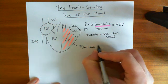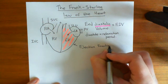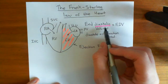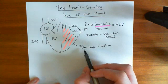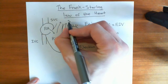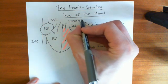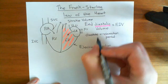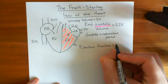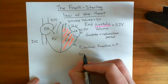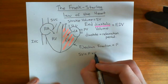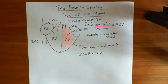The ejection fraction is what fraction of the blood is actually ejected. For instance, if half of the blood in the left ventricle at the end of diastole — half of the end diastolic volume — was actually ejected, then the ejection fraction would be a half. The volume of blood that is actually ejected is called the stroke volume. So stroke volume (SV) equals the end diastolic volume times the ejection fraction (F).